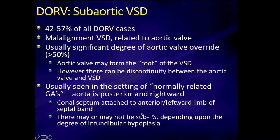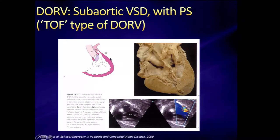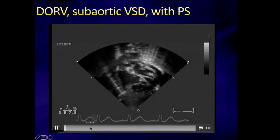Subaortic VSDs are the most common type of DORV. This is usually a malalignment-type VSD related to the aortic valve. Usually the aorta is posterior and rightward, but may be side by side. The aortic valve may form the roof of the VSD, or there can be complete discontinuity between the aortic valve and the VSD with a muscular rim surrounding the VSD entirely. The conal septum is attached to the anterior and leftward limb of the septal band. There may or may not be subpulmonary stenosis depending on the degree of infundibular hypoplasia. This is the TET type of DORV, with subpulmonary stenosis and a subaortic VSD.